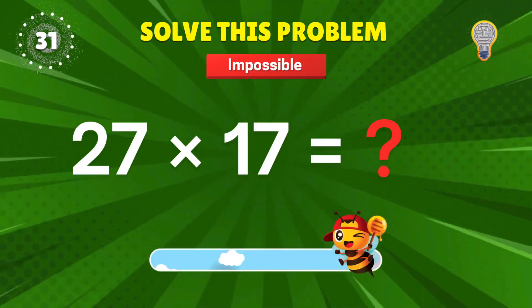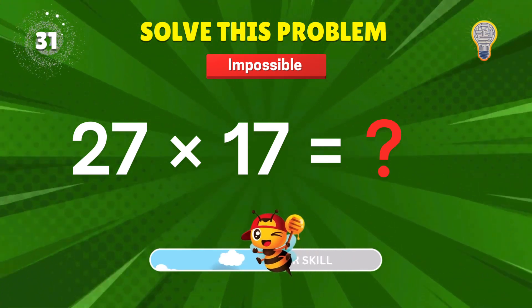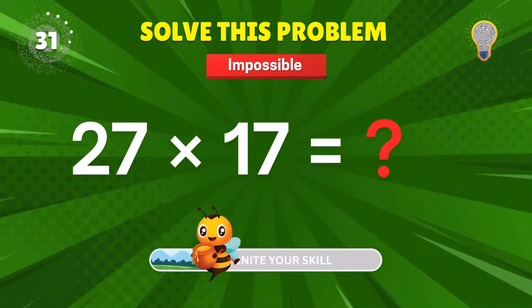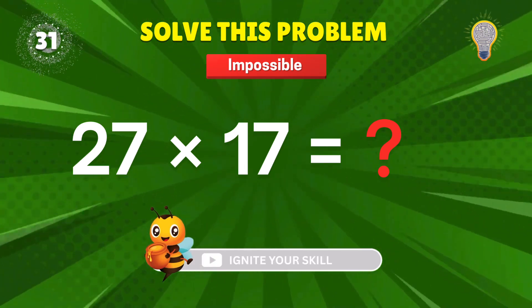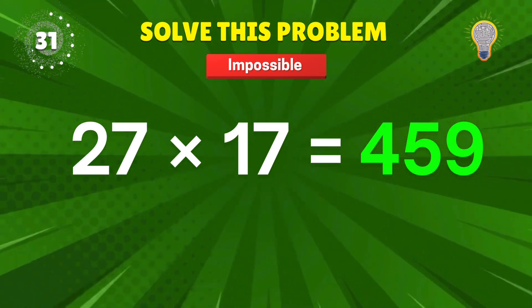27 times 17? Brain gym time. Stretch those neurons. 459. You crushed it. Plus 1.